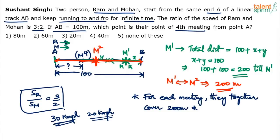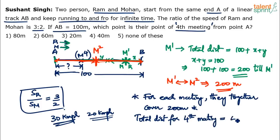The fourth meeting requires 4 × 200 = 800 meters of total combined distance. For the fifth meeting it would be 1000 meters, for the third it would be 600 meters. Now we can find how much each person has covered individually, since their speed ratio is 3 to 2 and they have both been running for the same amount of time.